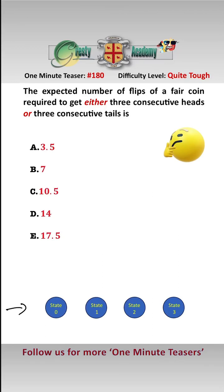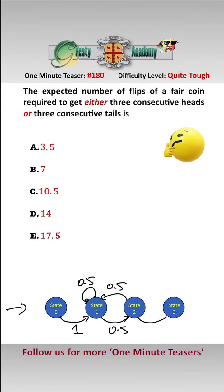We can use a Markov chain to solve this, where each state is the number of consecutive heads or tails. From state 0 to state 1 the probability is 1. At state 1, if the coin is opposite we get 0.5 back to state 0, and if it's the same we get 0.5 to state 2. At state 2, if the coin is opposite we go back to state 1, and if it's the same we get 0.5 to state 3, at which point the task is done.